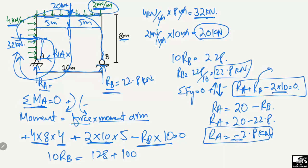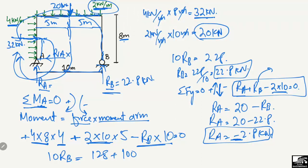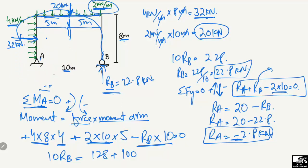The negative value of RA means the assumed direction was incorrect. RA was assumed to act upward, but the negative sign indicates it actually acts downward with a magnitude of 2.8 kilonewton. If you get a minus sign in your answer, it means you need to reverse the assumed direction — keep this in mind.